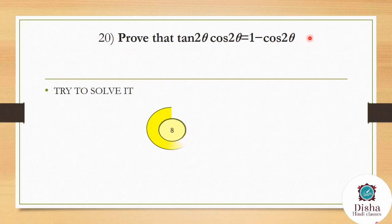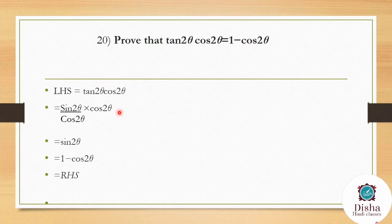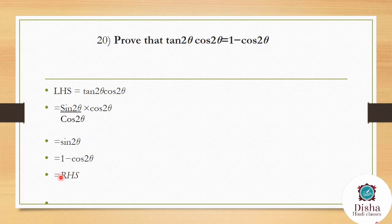Prove that tan 2θ × cos 2θ = 1 − cos 2θ. Write tan 2θ = sin 2θ / cos 2θ. Then tan 2θ × cos 2θ = (sin 2θ / cos 2θ) × cos 2θ = sin 2θ. Using the identity sin 2θ = 1 − cos 2θ, we get sin 2θ = 1 − cos 2θ. Hence LHS = RHS, proved.